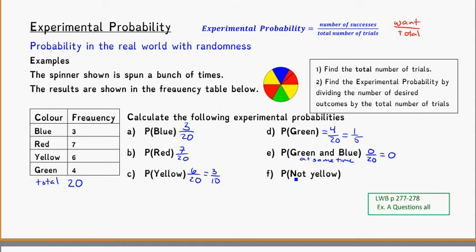And here I'm asking you for the probability not yellow. That means what's the probability that it did not land on yellow? So out of the 20 times that we spun this thing, how many times did it not land on yellow? So let's add those up. 3 plus 7 is 10, plus 4 is 14. So 14 out of the 20 times it was not on yellow. And simplify that to 7 over 10.